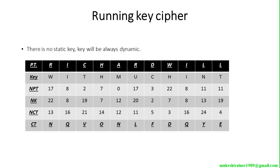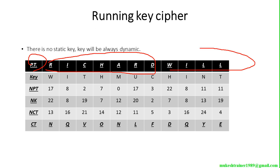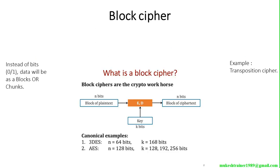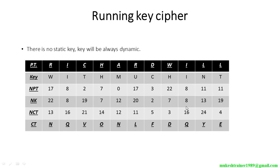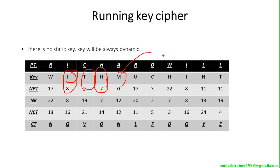Running key cipher: there is no static key — the key is always dynamic. You can use your own algorithm, making I equal to 8, T equal to 2, H equal to 7, M equal to 9, C equal to 11 — it is your choice. That is called running key cipher. The same dynamic method used for encryption is also used for decryption.